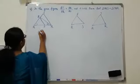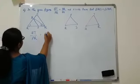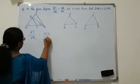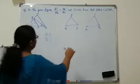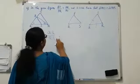It is given that QT by PR is equal to QR by QS. So QT by QR is equal to QR by QS.